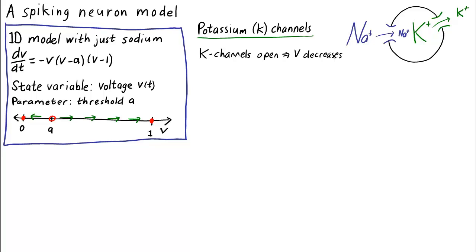Hodgkin and Huxley determined that the potassium channels share an important property with the sodium channels. Potassium channels tend to open when the voltage inside the cell increases. In this case, since potassium channels bring the voltage down, the potassium channels act as a negative feedback. If the voltage increases, potassium channels will open, which will counteract the voltage change, lowering the voltage.